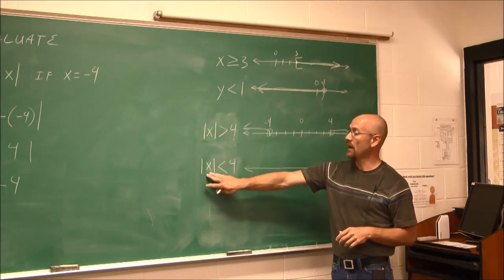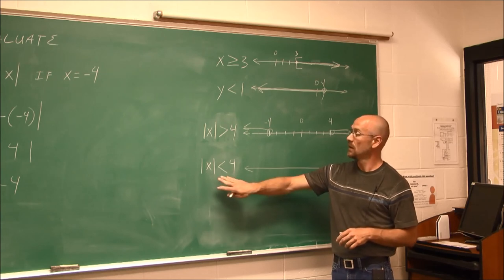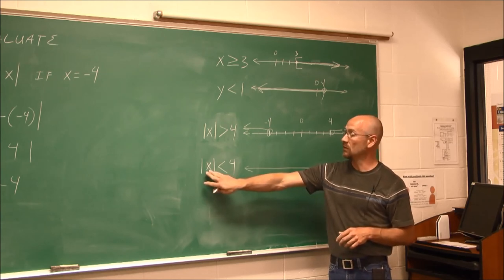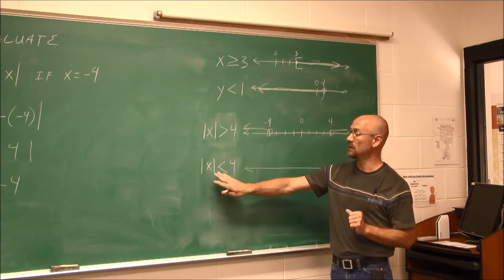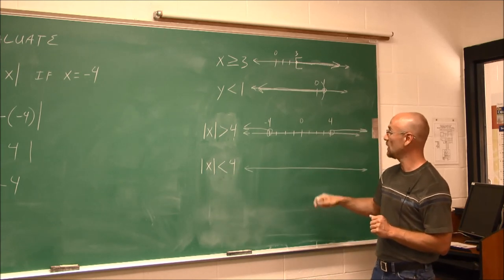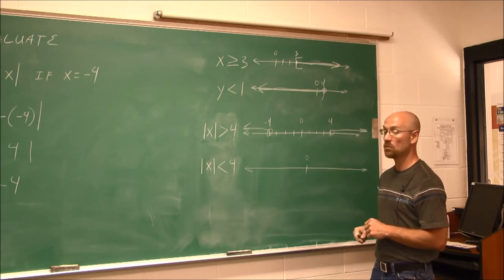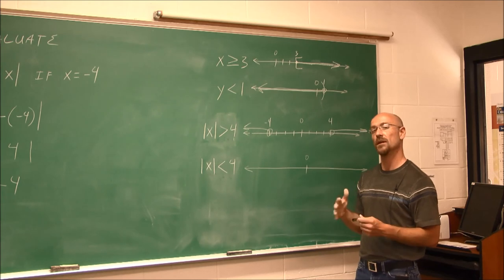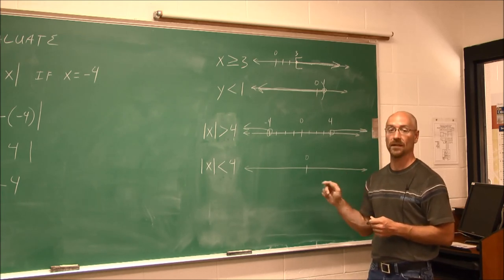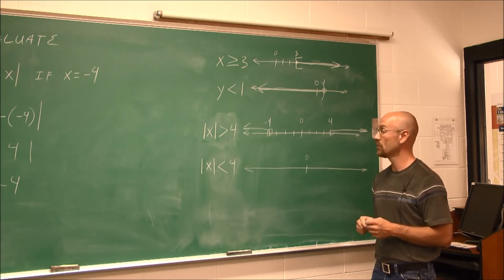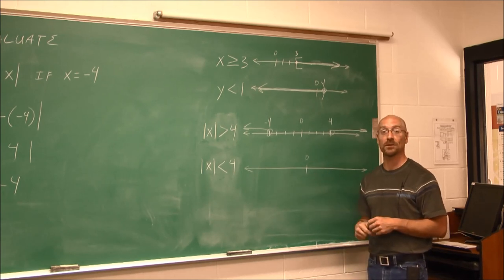Here we have the absolute value is less than 4. There are two possibilities. Go ahead and try this one on your own — use your reference point of 0, the distance of 4, and figure out which values are going to be less than 4. Thank you for watching.